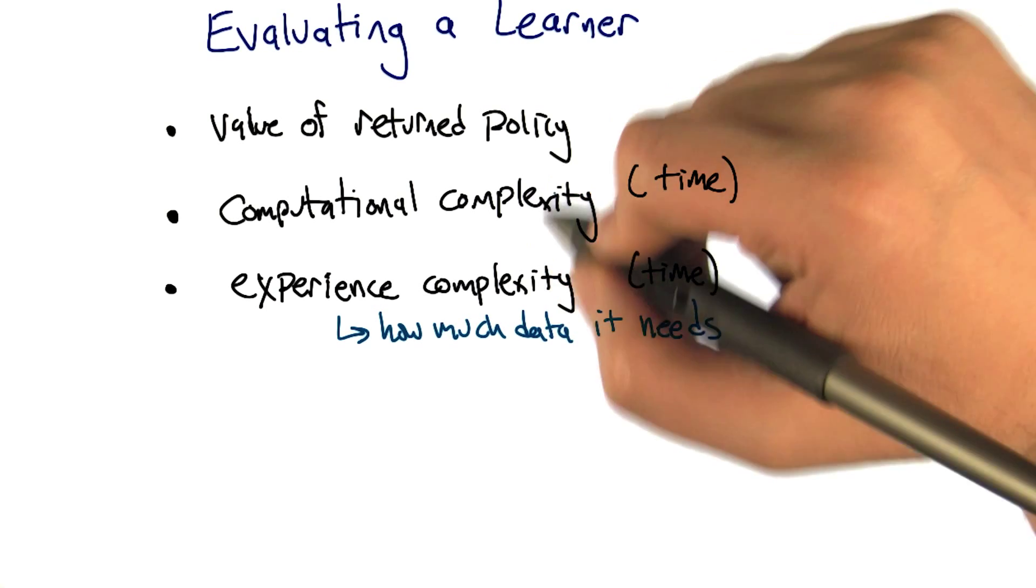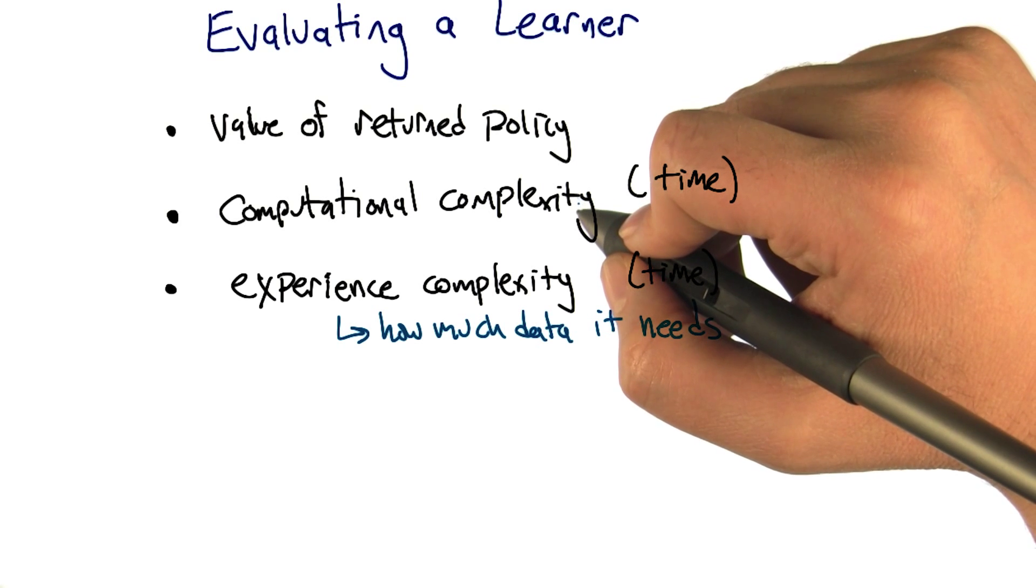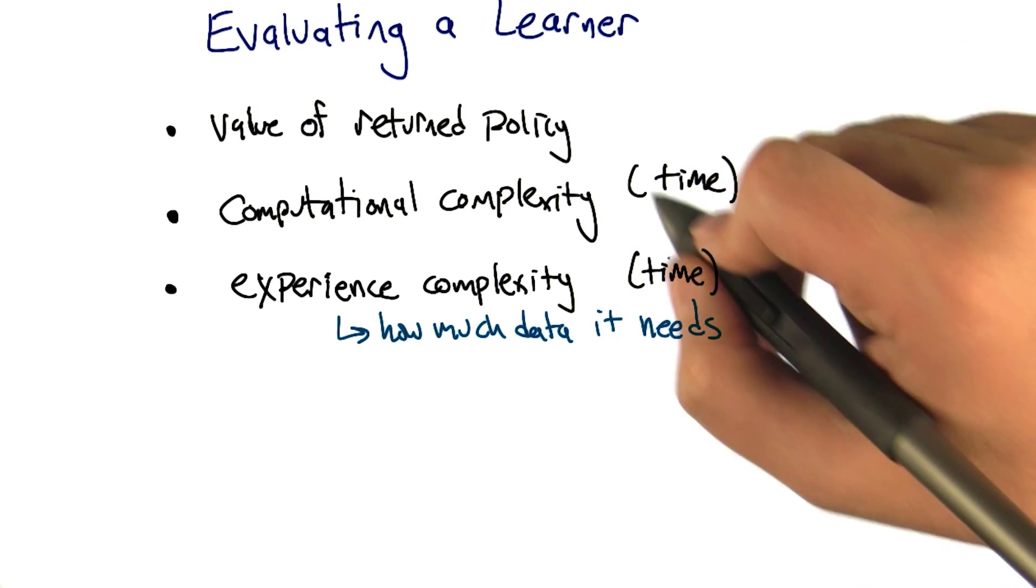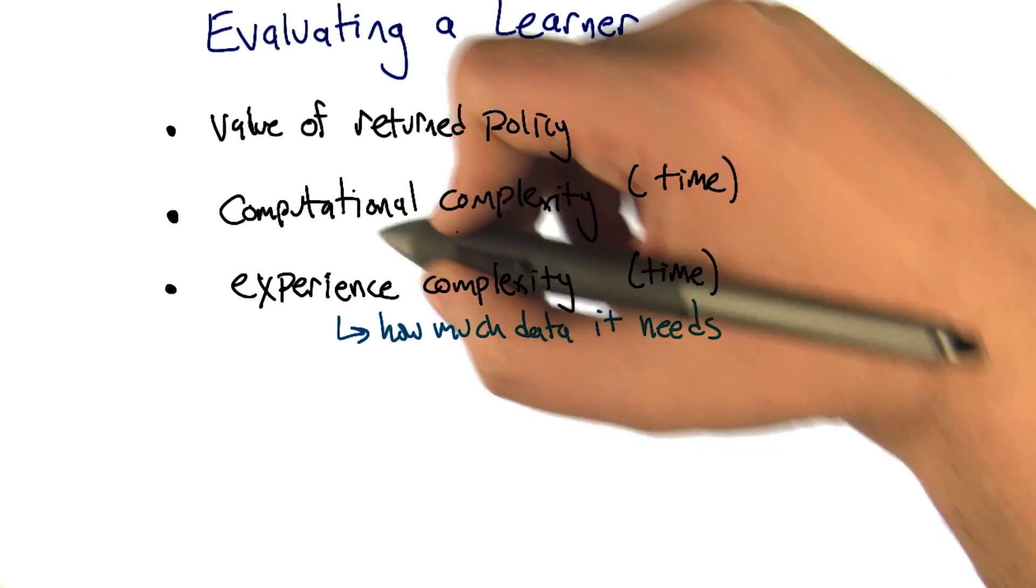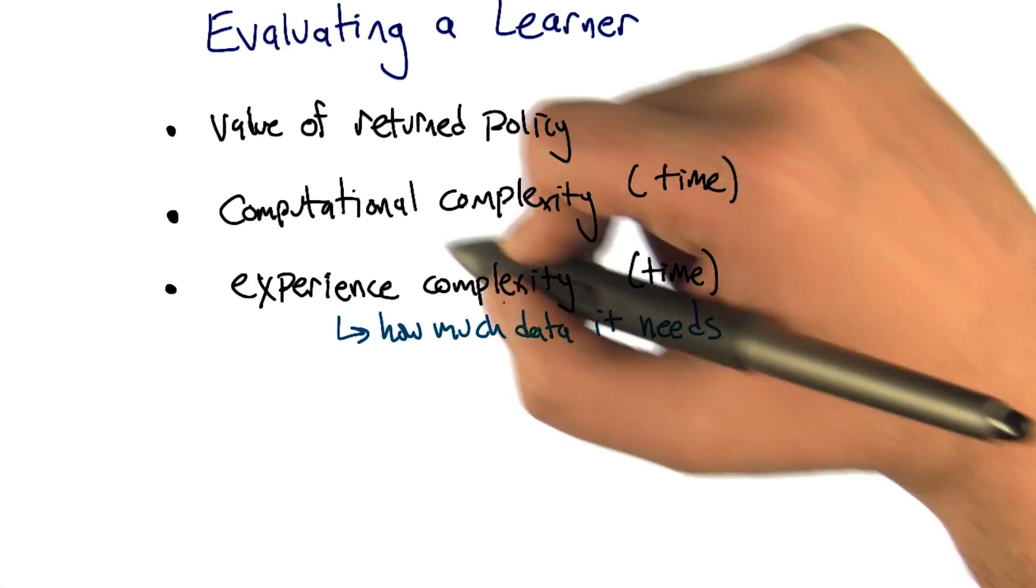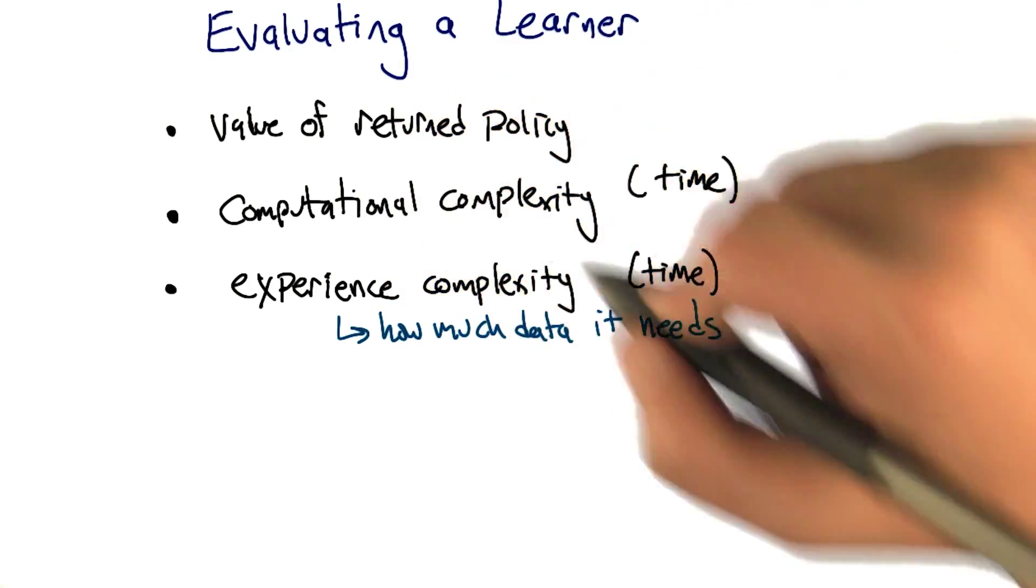Though, of course, there's tradeoffs. I mean, if it, to do that, it actually has to compute for two billion years, then that seems maybe not so good either. So there can be tradeoffs between how much time that the learner takes in terms of interactions with the environment and how much time that it takes in terms of the computations that it does between interactions.